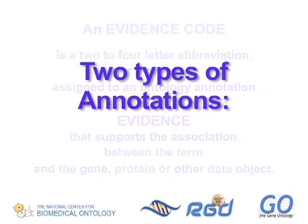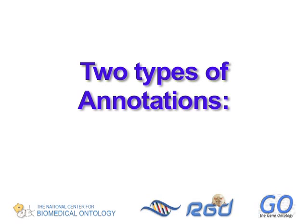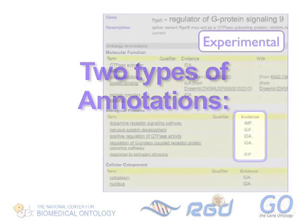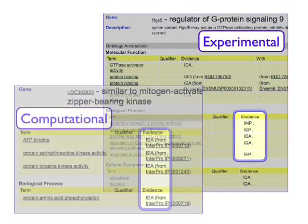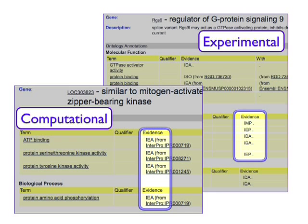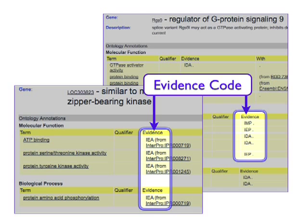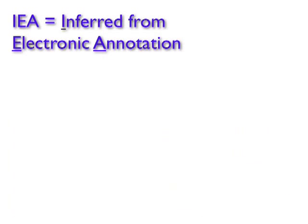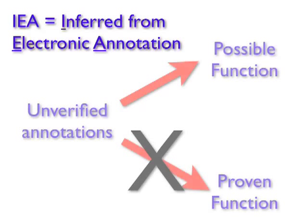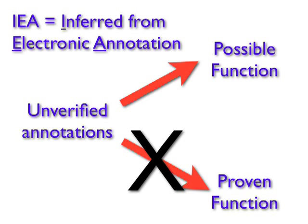In part one of Anatomy of an Ontology Annotation, we mentioned that annotations could be divided into two general types — those based on experimentation and those which are solely computational — and we showed that the way to tell which category an annotation falls into is via the evidence code. The only evidence code we talked about in detail in part one was IEA, or inferred from electronic annotation.